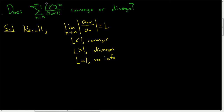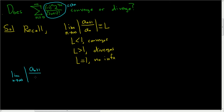So let's do this problem. This right here is our a_sub_n. This is not the hardest problem, but it's also not the easiest, so it's a good example. We'll take the limit as n approaches infinity, and I'll show all the steps — a_sub_(n+1) divided by a_sub_n.